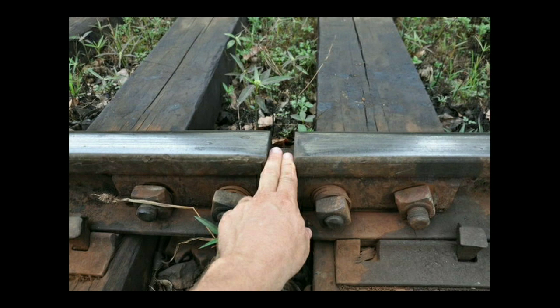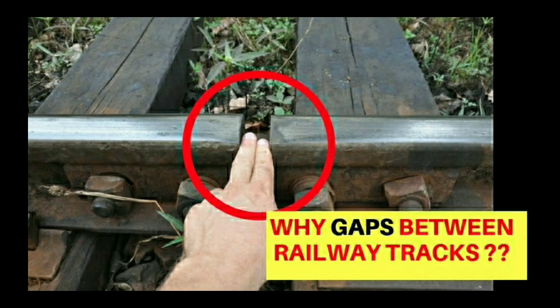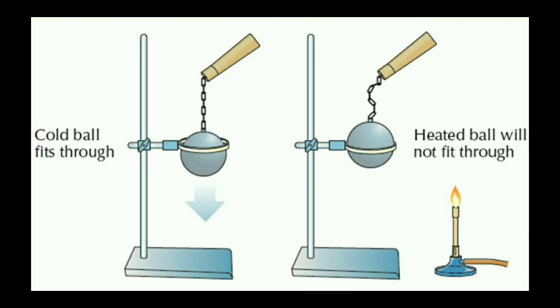Have you noticed the joints between railway tracks? There is always a gap between them. This gap is kept because in summer, due to heat, the metal track expands in size. This expansion may cause loosening in the attachments below, which could lead to accidents. That is why a gap is placed between the tracks.